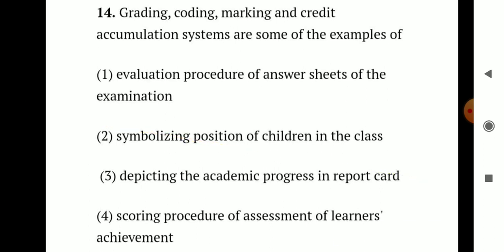Question number 14. Grading, coding, marking, and credit accumulation systems are some examples of: Option 1 - evaluation procedure of examination. Option 2 - symbolizing position of children in class. Option 3 - depicting academic progress in report card. Option 4 - scoring procedures of assessment of learners' achievement. Grading, coding, and marking are examples of scoring procedures for assessment. So the correct answer is Option 4 - scoring procedures of assessment of learners' achievement.